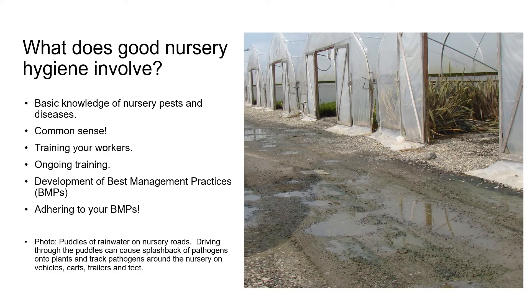Pests and diseases that are new to California appear from time to time, so it's important to stay current with what's going on in the industry. Ideally every growing operation should have its own set of best management practices or BMPs for disease prevention. Our focus is on propagation, but all of our good work goes down the drain if the rest of the nursery or growing operation isn't also part of the process, so ideally BMPs should cover the entire production process from start to finish and not just propagation.